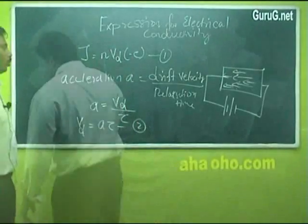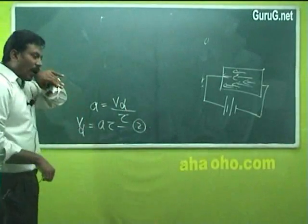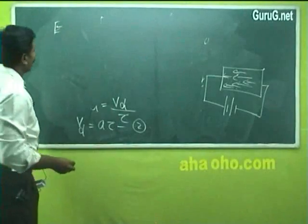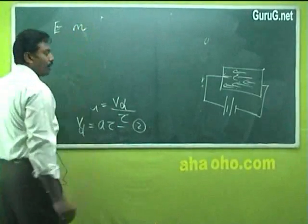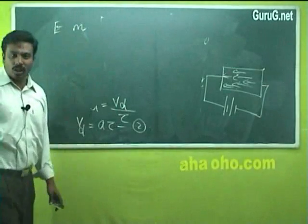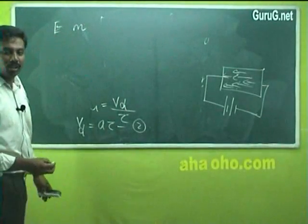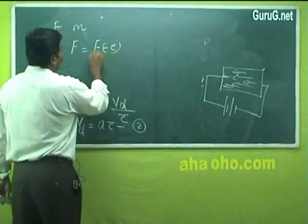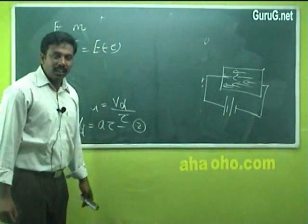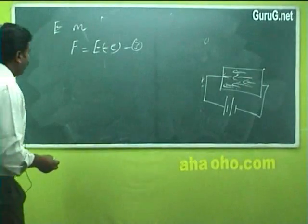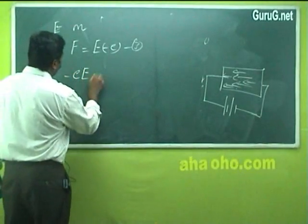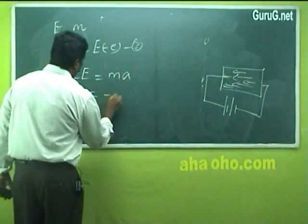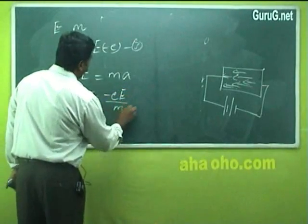VD is equal to A into τ — put this as equation number 2. On the application of the electric field, if E is the applied electric field and M is the mass of the electron, then the electron will experience a force due to the electric field. That force is equal to E into minus e, where E is the applied electric field and e is the charge of the electron. On comparing: minus e·E = M·A, so A = minus eE divided by M.